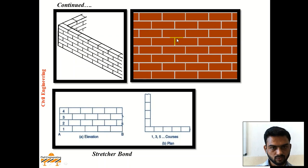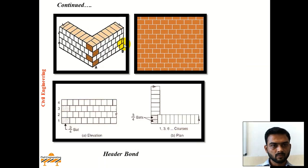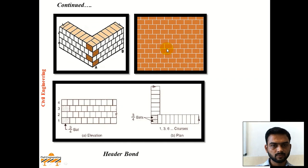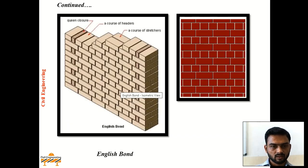This is the pictorial view of stretcher bond. Here you can see all the stretchers are facing on the wall side. This is header bond — here you can see all the headers are facing. This is English bond, where alternate layers of headers and stretchers are being laid.